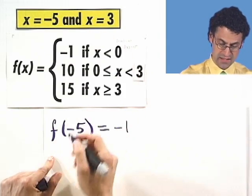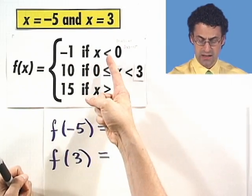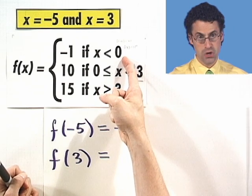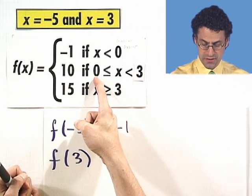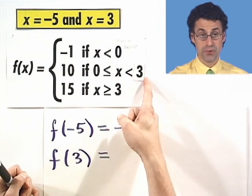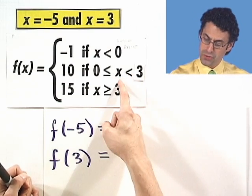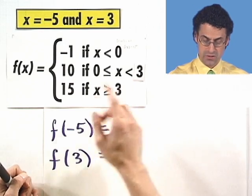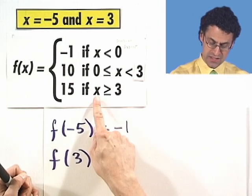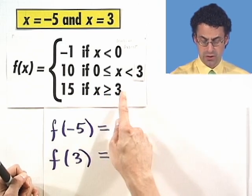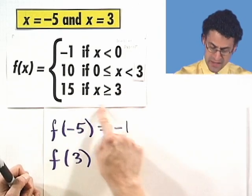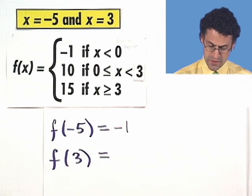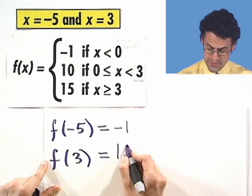What about when x equals 3? Is 3 less than zero? No. Is 3 greater than or equal to zero, but less than 3? Well, no. 3 is not less than 3. So this is not the case we're in. Is 3 greater than or equal to 3? Well, yeah. In fact, 3 equals 3. So in fact, this must be the case we're in, which means the value of the function in this case is 15.